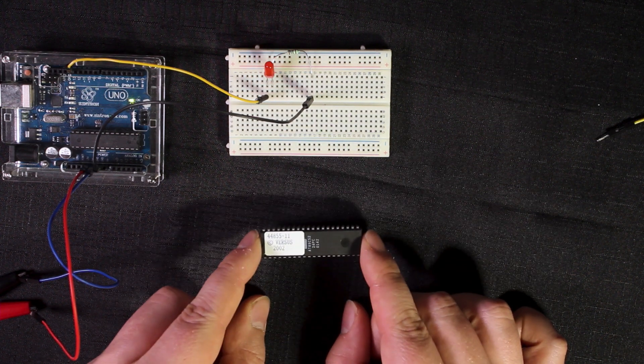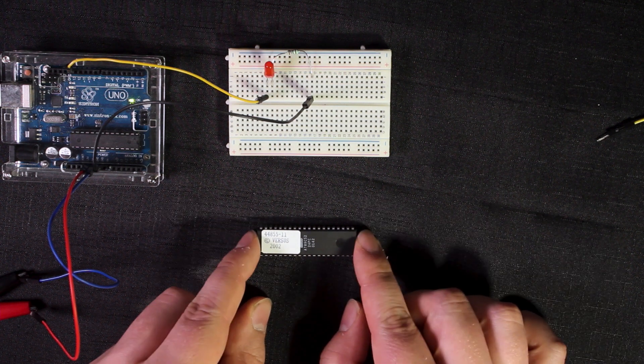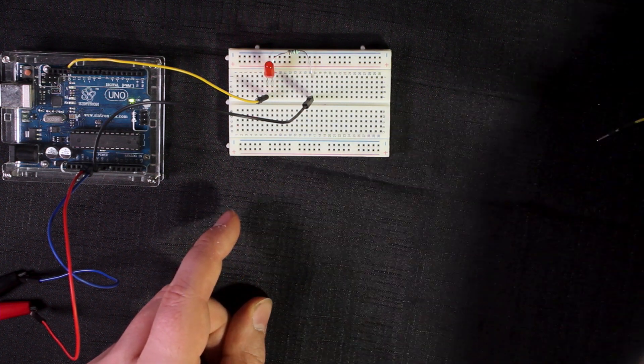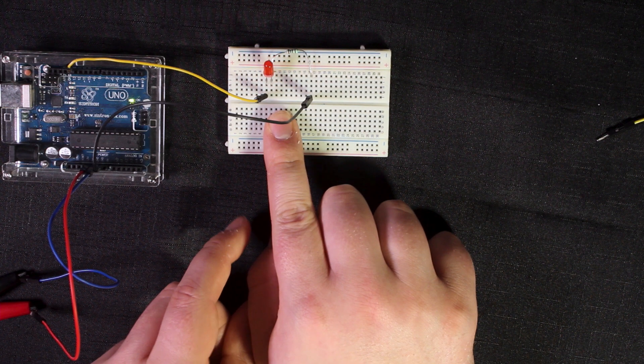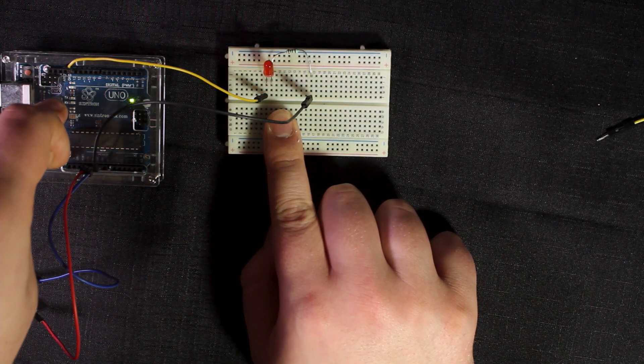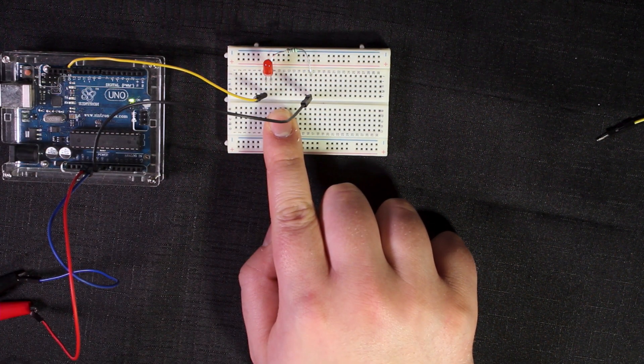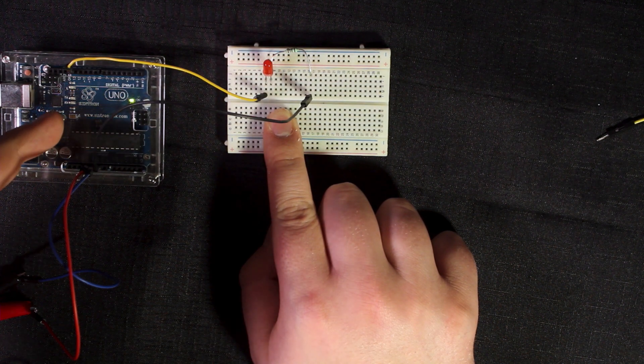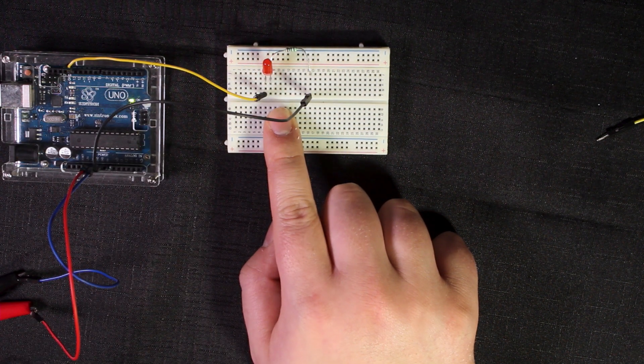As we can't see what's going on to the chip to see if it's working, for today's purpose we'll be using this LED. When the Arduino pulls the pin high the LED lights up, and when the Arduino pulls the pin low it turns the LED off.